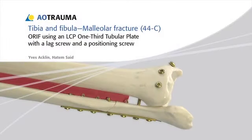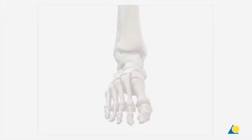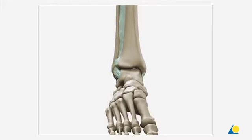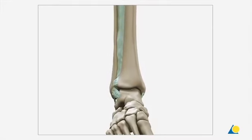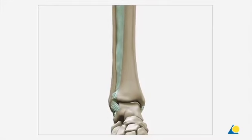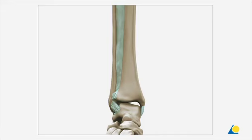In this presentation, a type C maleolar fracture will be treated using open reduction and internal fixation. A type C maleolar fracture occurs when the foot is in pronation and an external rotational force is applied to the ankle joint, which leads to a cascade of injuries.